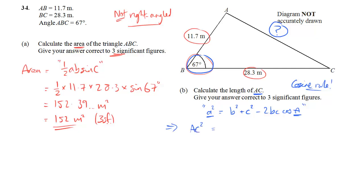So AC squared, the side that we want, is 11.7 squared plus 28.3 squared. And then it's just minus 2 times those two lengths multiplied. So 2 times 11.7 times 28.3 times cos of the angle. So times cos 67 degrees.